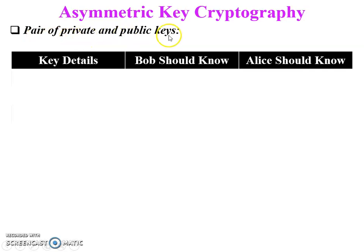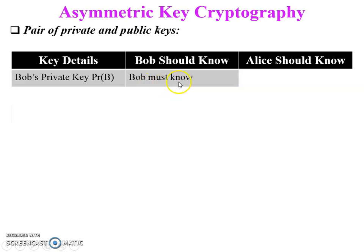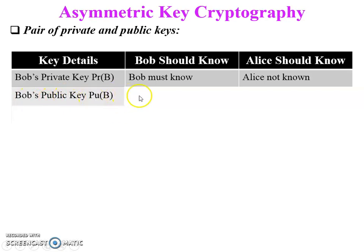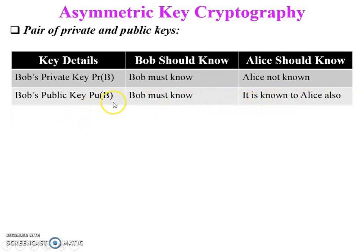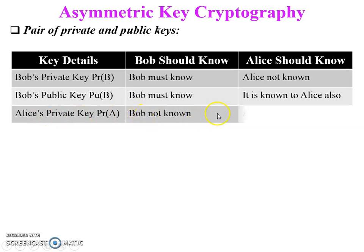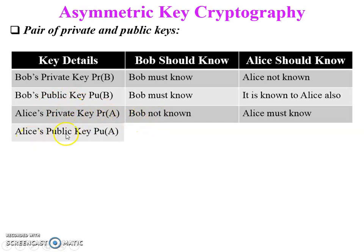Regarding the pair of private and public keys — who knows whose keys: Bob's private key PR_B is known by Bob only; Alice does not know it. Bob's public key PU_B is a public key, so it is known by both Bob and Alice. Similarly, Alice's private key is known only to Alice and not shared with Bob. Alice's public key PU_A is public, so both Bob and Alice know it.